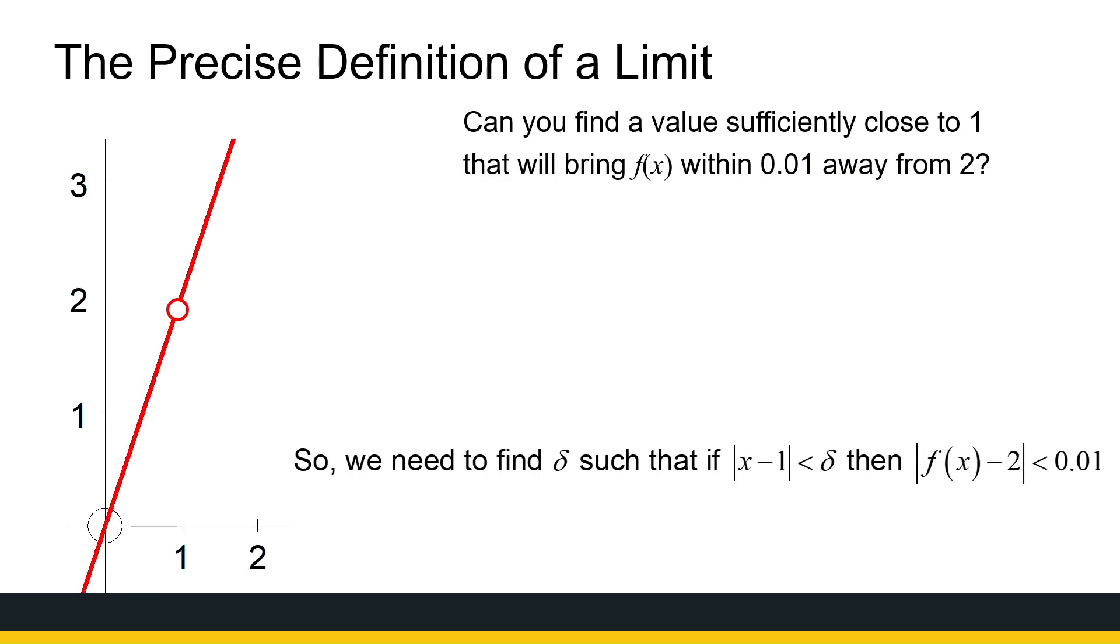Let's say we want to zoom in a bit more. Let's say we want our epsilon to be 0.01. Can I find x values? That'll get me within 0.01. So that will be then 1.99 and 2.01.